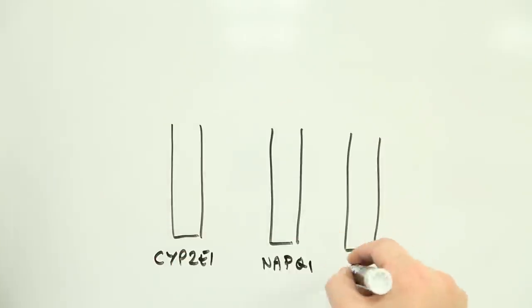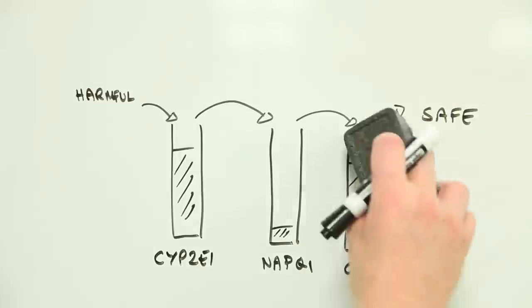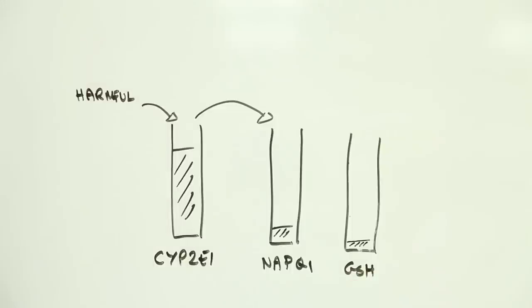But the kicker is that the body can only produce so many of these antioxidants. And so when the antioxidant GSH is all used up, the toxic NAPQI begins to build up and liver cells start to die.